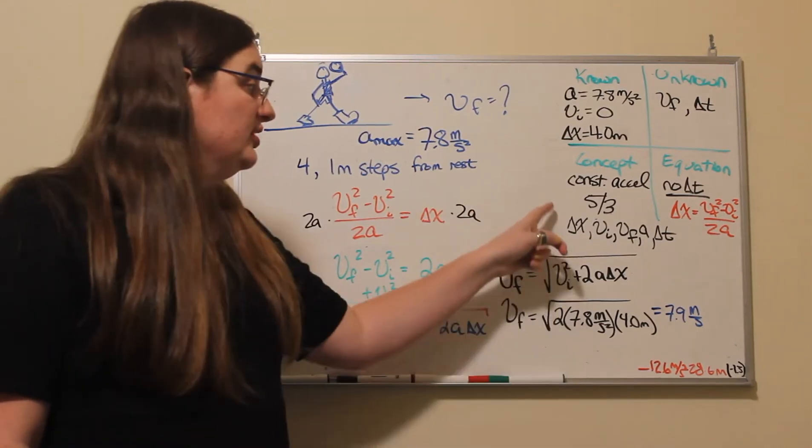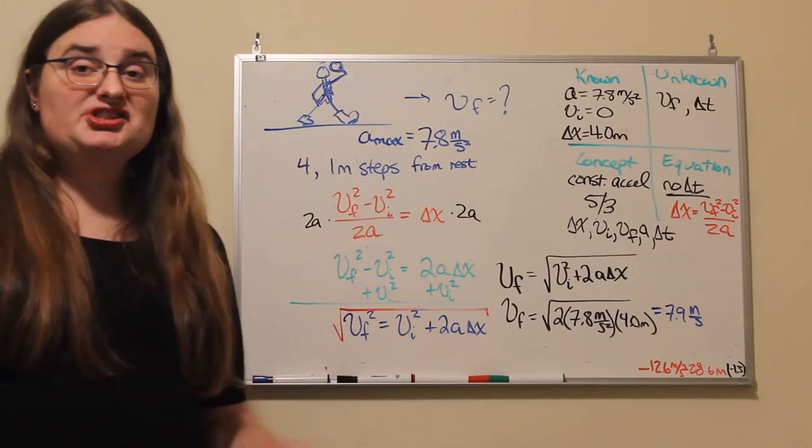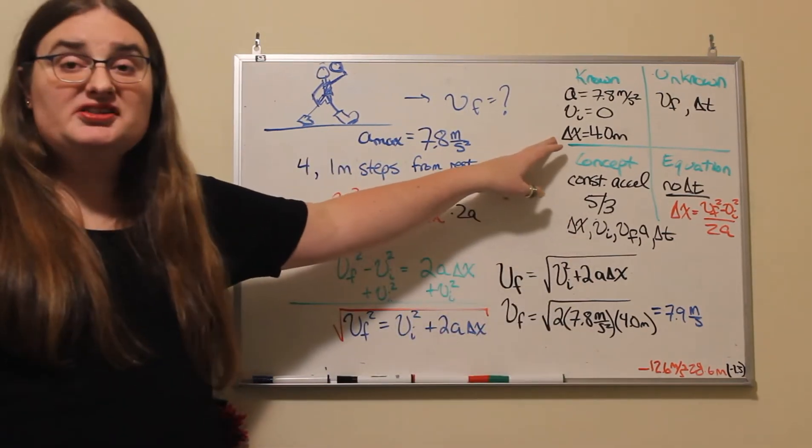So our five variables: our first is our displacement. For one meter steps, our displacement is going to be four meters.